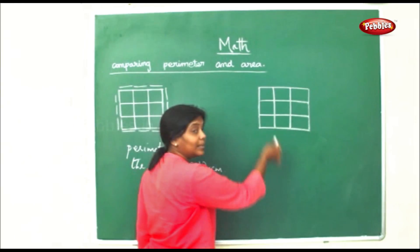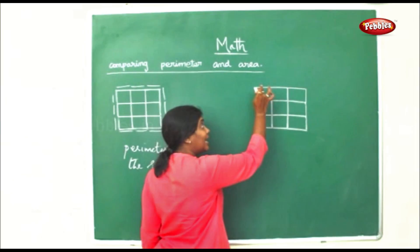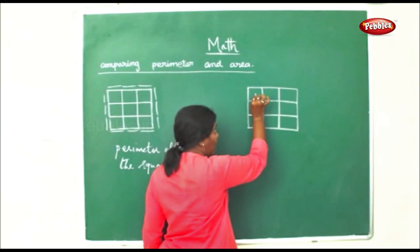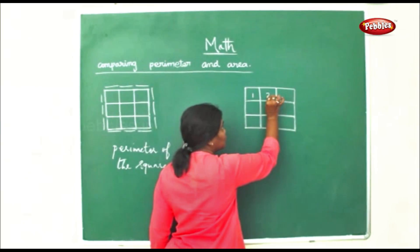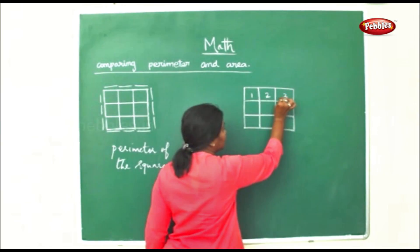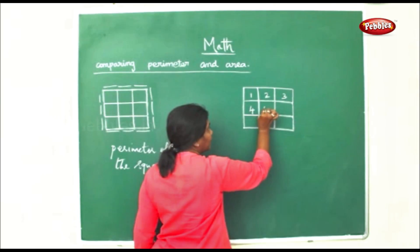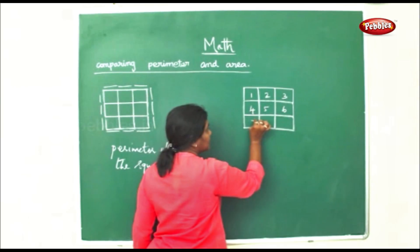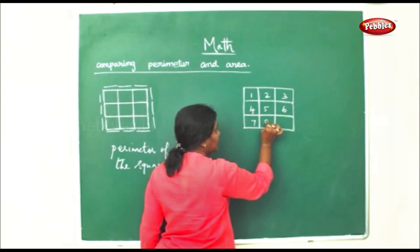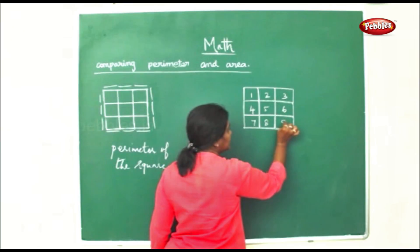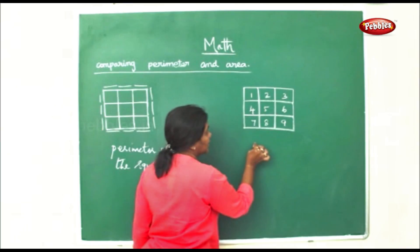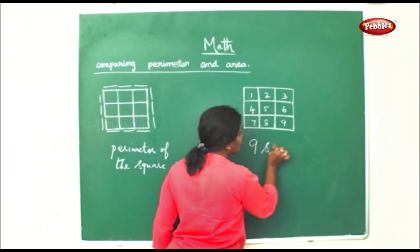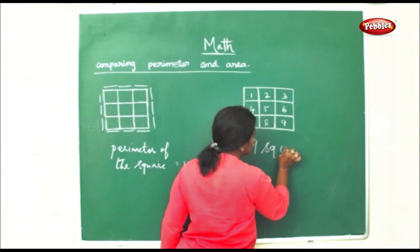Now for area, we count the squares inside. One, two, three, four, five, six, seven, eight, nine — so the area is 9 square centimeters.